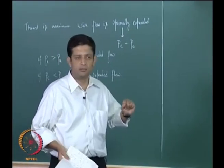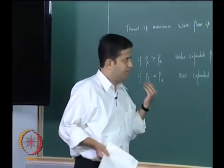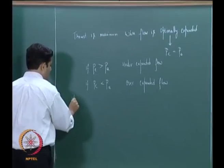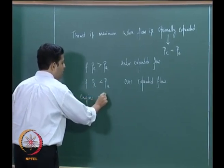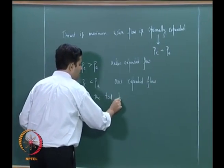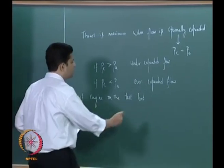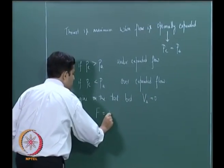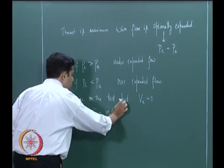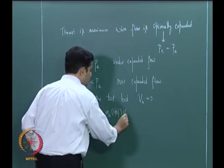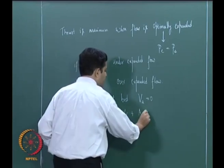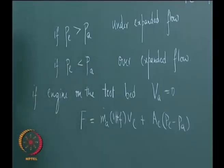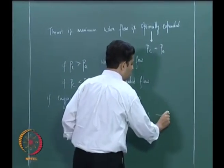Now if the turbojet engine is on a test bed, then there will be no incoming velocity V-A. So if the engine is on the test bed, V-A is equal to zero, and therefore you get a simplified thrust equation. This is also known as static thrust — the thrust the engine can provide when the aircraft has not yet started moving.